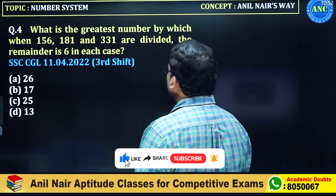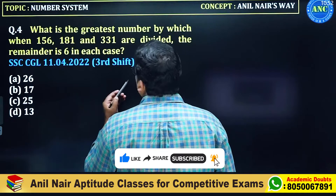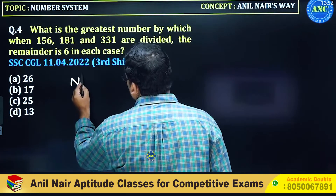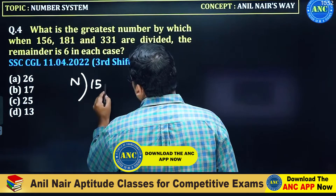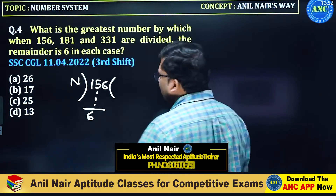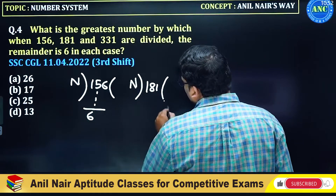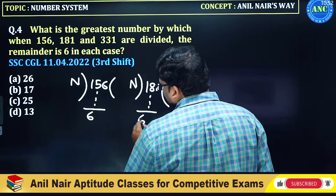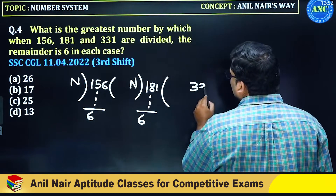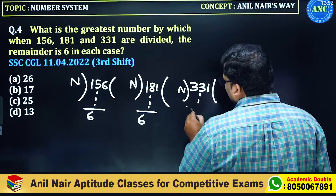What is the greatest number by which when 156 is divided the remainder is 6? That means there is a number which is dividing 156 with remainder 6. The same number when dividing 181, the remainder is 6. The same number when dividing 331, the remainder is 6.